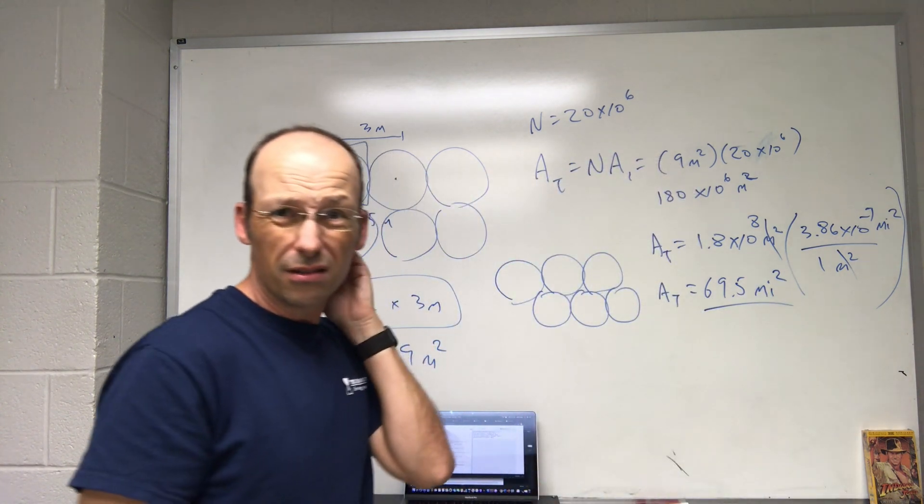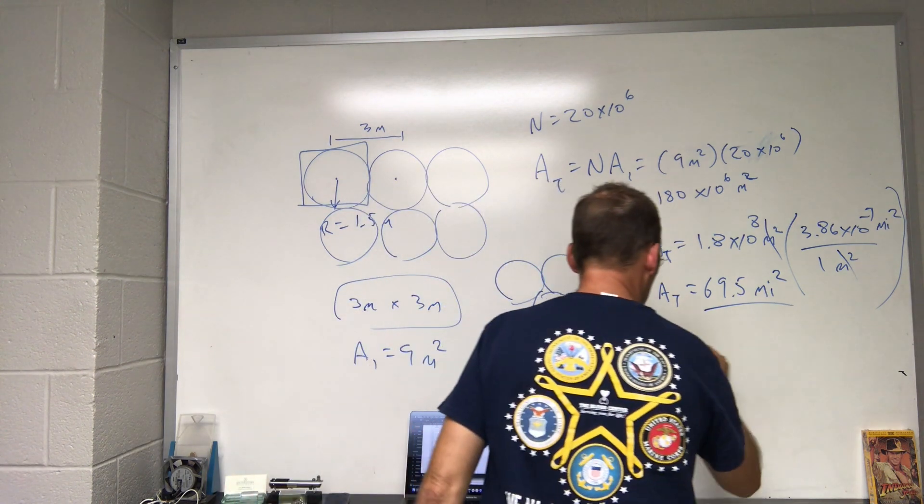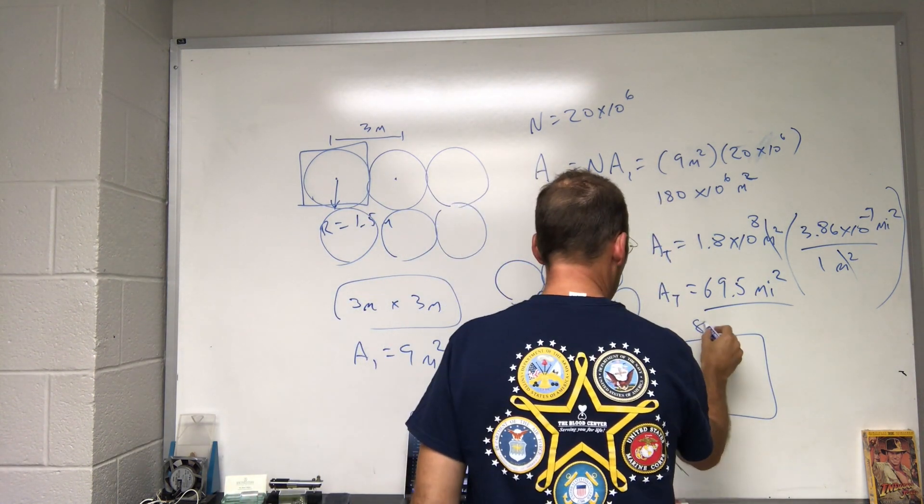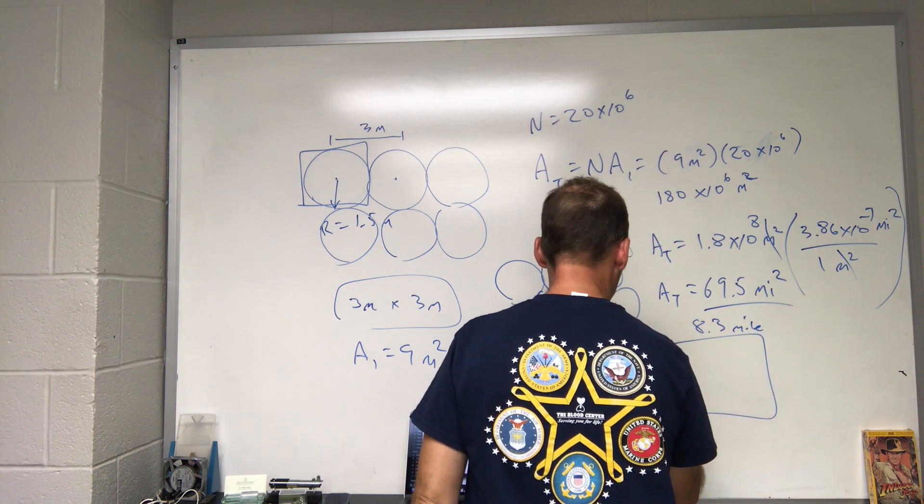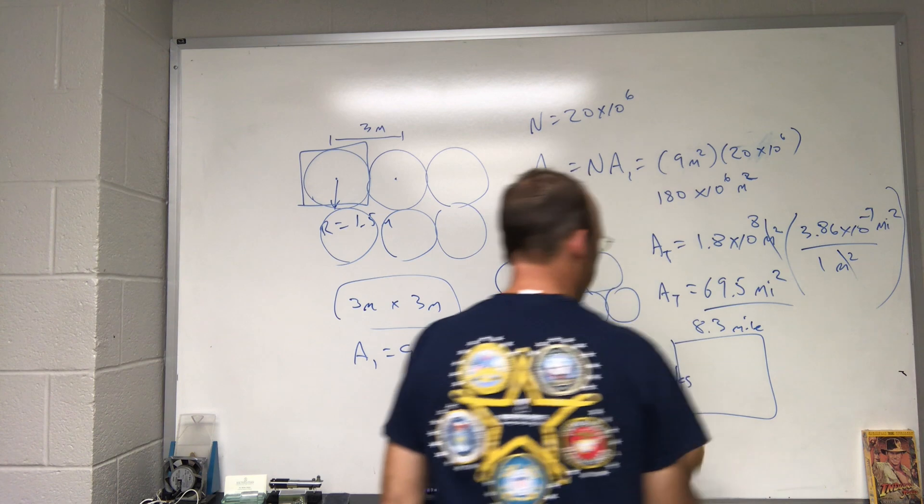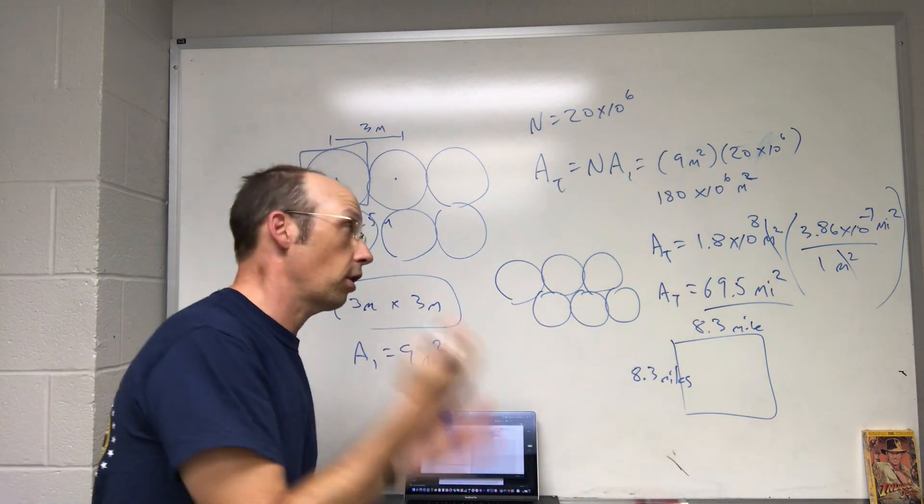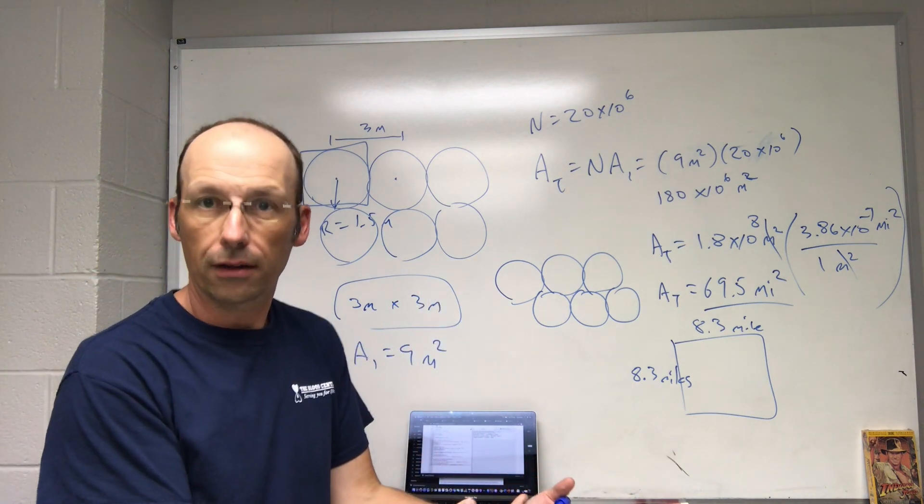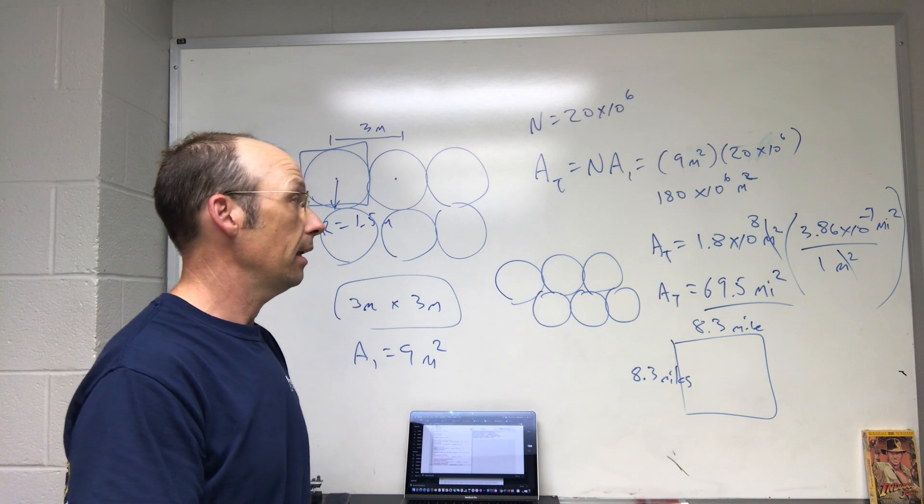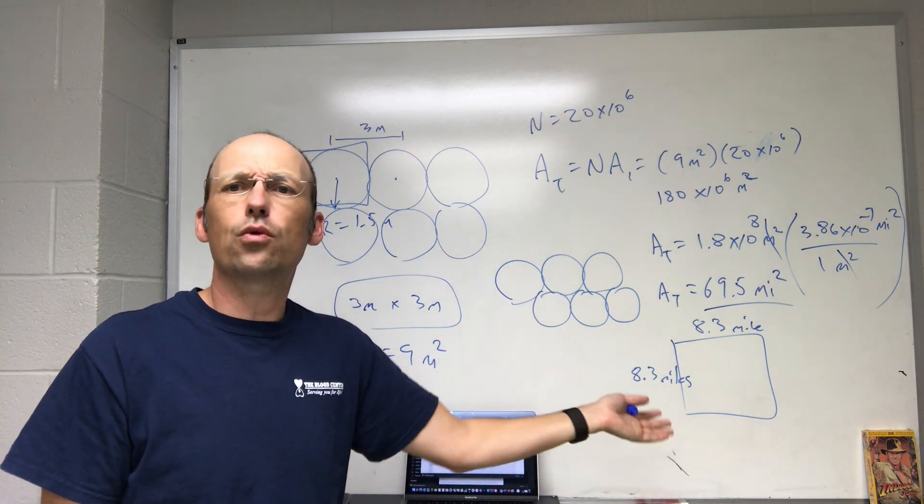Which is way smaller than I would think. That's just if you make a square, we have 8.3 miles by 8.3 miles. That's not very big. So, we're not talking state size. We're not talking Rhode Island. We're not talking Texas. We're talking state park size, right? And that doesn't seem right. Could you really get 20 million trees in there?